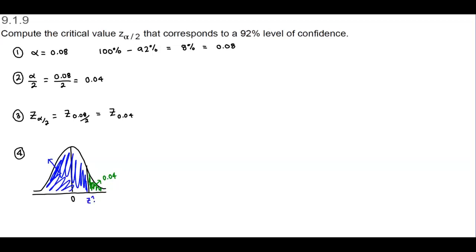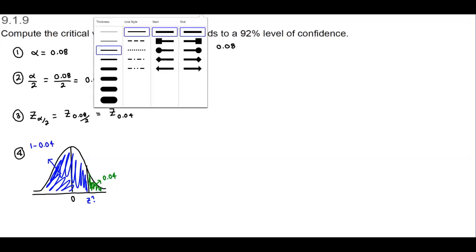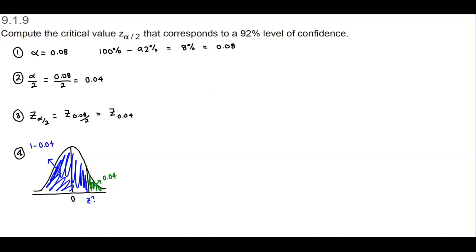In order to find that area to the left, we're going to take 1 and subtract that 0.04. When we subtract that 0.04, we get 0.96. That is the area that's to the left of that Z score.